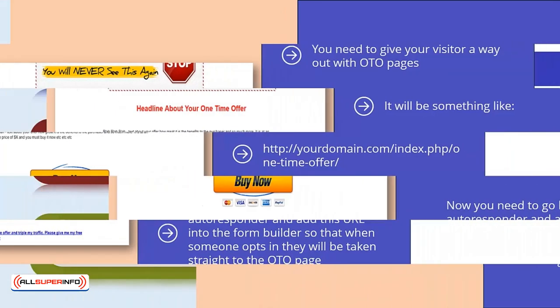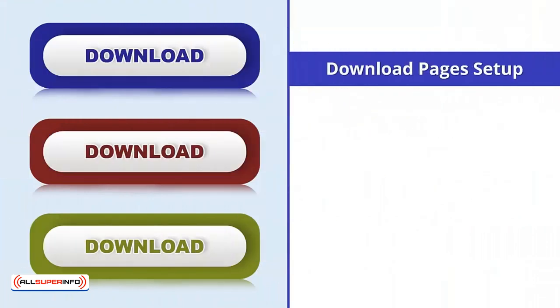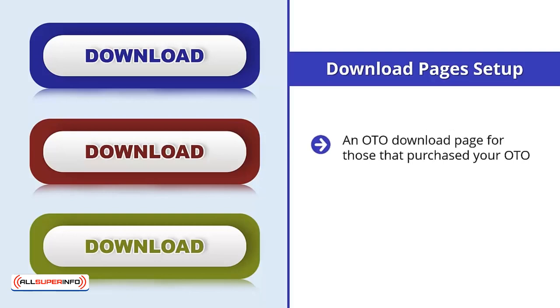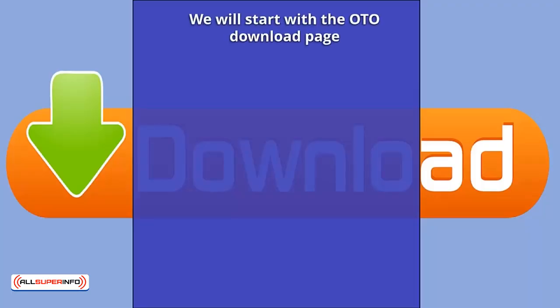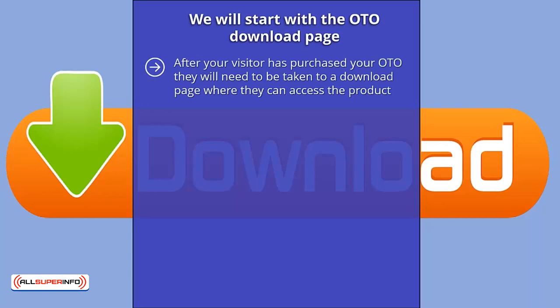You will then need to paste it into your squeeze page. You will be creating two download pages: an OTO download page for those that purchase your OTO, and a lead magnet download page for all subscribers. We will start with the OTO download page. After your visitor has purchased your OTO, they will need to be taken to a download page where they can access the product. This is simple to create, but there are a few things to consider. You want to take every precaution that you can to safeguard against theft.